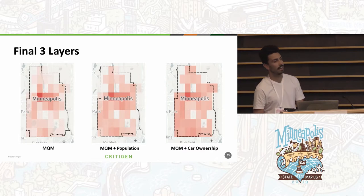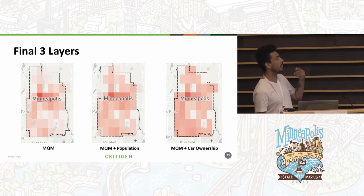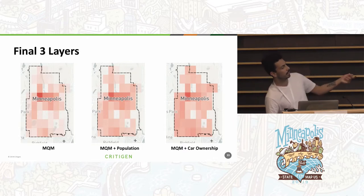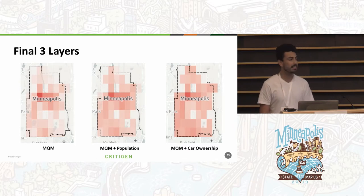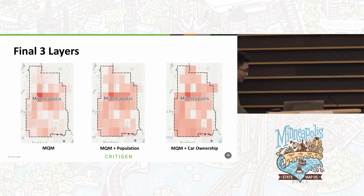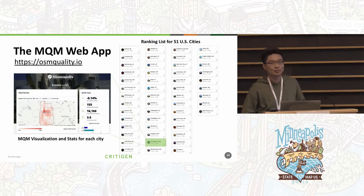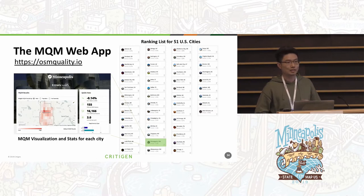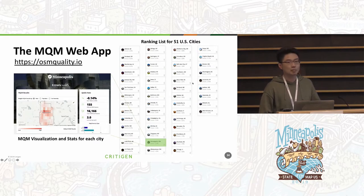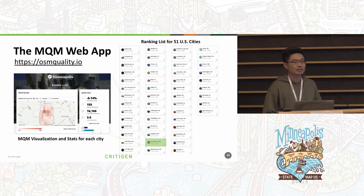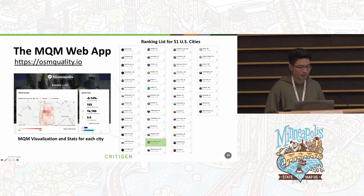This leads to three different types of layers, putting the reprioritization into the hands of the users. A user can look at just the MQM results, or MQM together with population, or MQM and car ownership together. We created a web app to show our analysis results — the address is osmquality.io. This year we looked at data quality for 51 US cities — the most populated city in each state plus Washington DC — and ranked them based on overall data quality, providing detailed visualization and stats for each city.